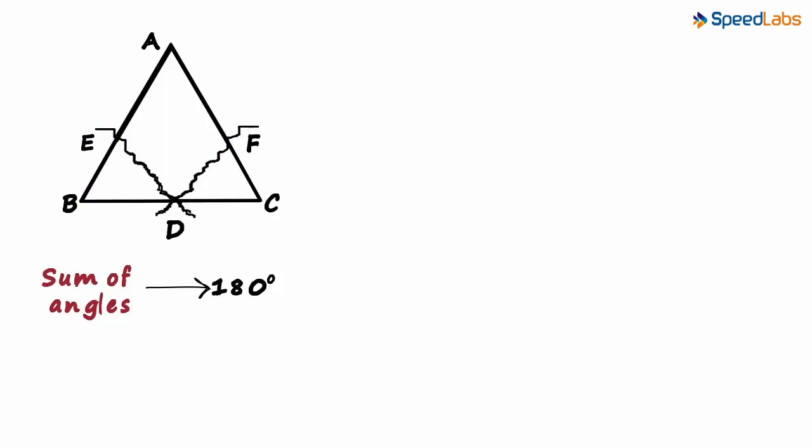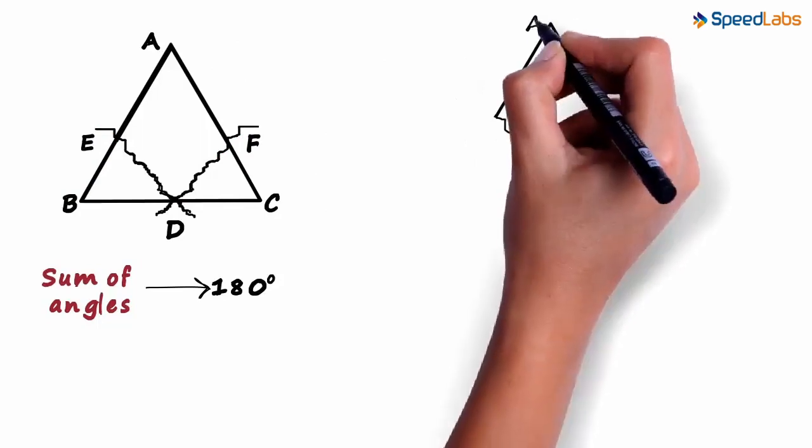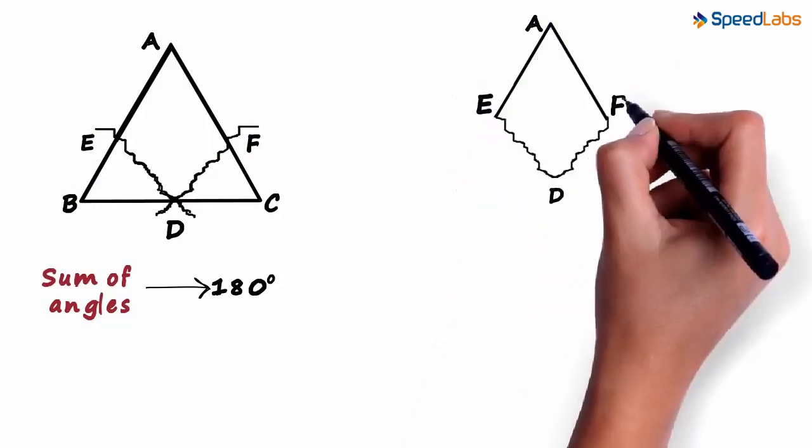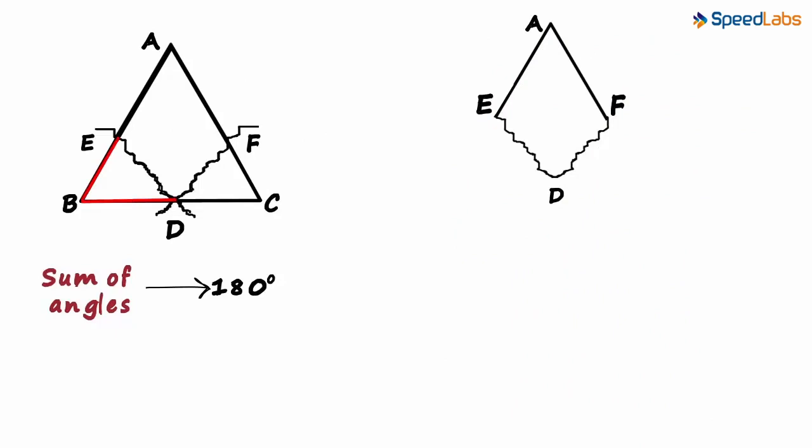The middle part will look something like this. This will be AEDF. Let's take this part away and it will look something like this. This is EBD. And the third part which is separated will be FCD.